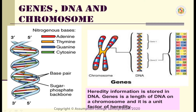Supporting these base pairs on the sides are what we call the sugar-phosphate backbone, which we can find here. The sugar-phosphate backbone is on the sides while the nitrogen bases are in the middle. Hereditary information is stored in DNA. A gene is a length of DNA on a chromosome, and it is a unit factor of heredity.